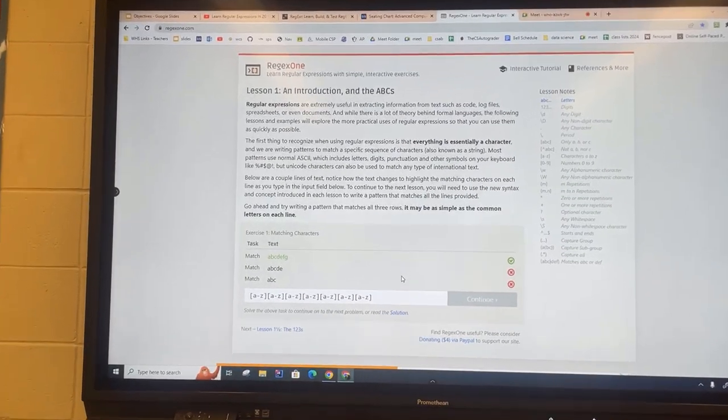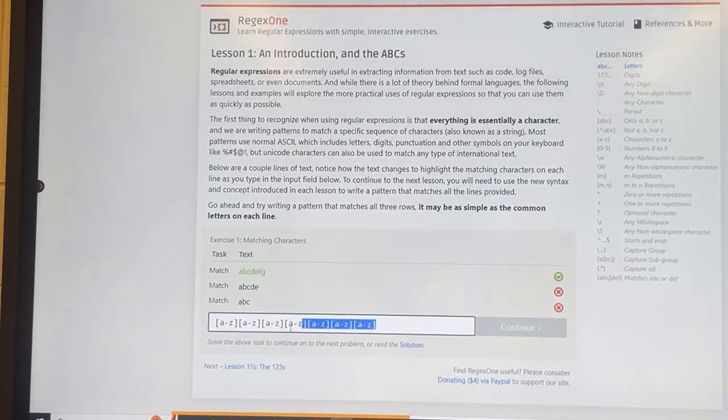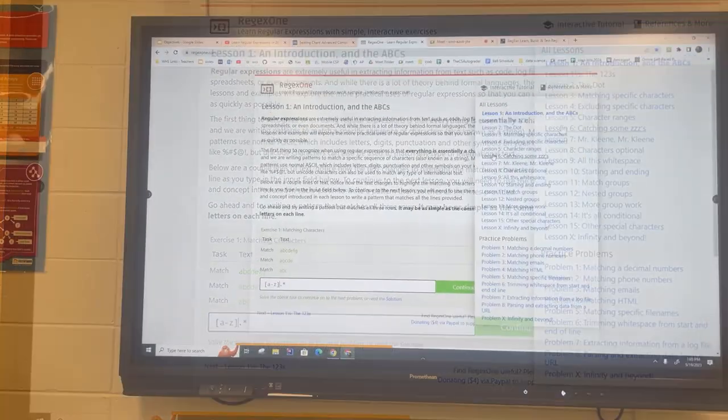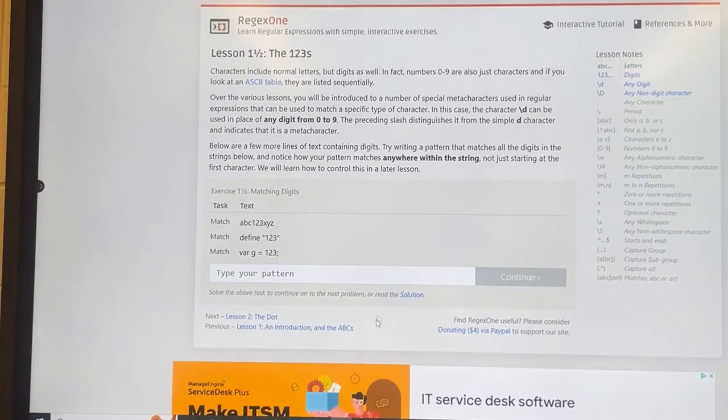For this particular example, we see that this string is being matched because there are seven characters, and here these other two strings are not being matched because we're asking for exactly seven. But if I replace this last part here, you can see it's going to match everything. We're going to continue with the next exercise.